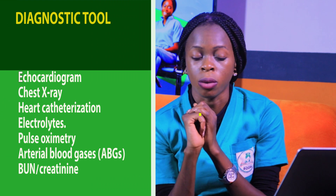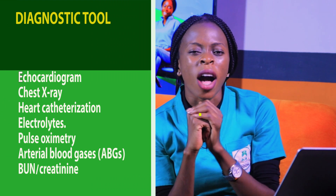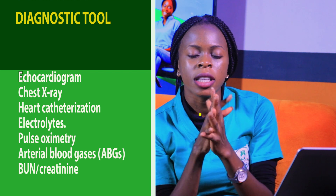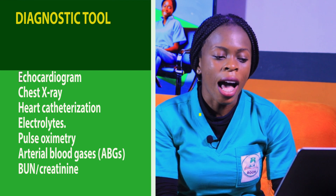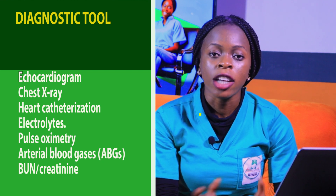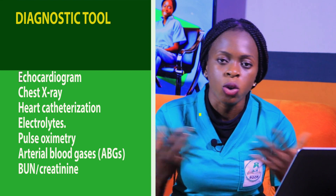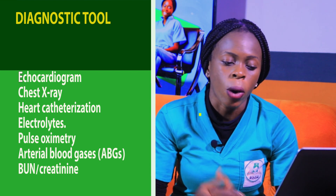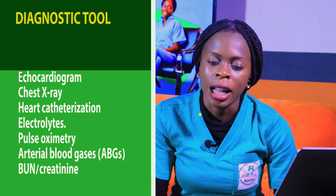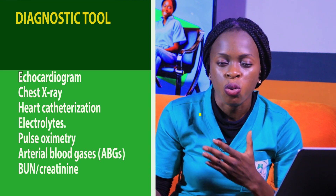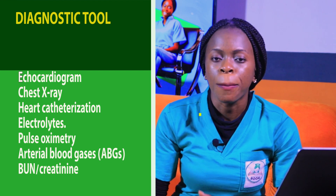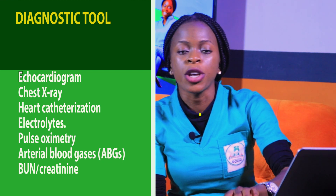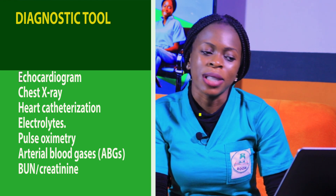The diagnostic tools for heart failure include the echocardiogram, chest X-ray, and heart catheterization. Electrolytes are checked because there will be movement and imbalance of electrolytes. Pulse oximetry is used to check oxygen saturation rates to ensure the body is getting enough oxygen. Arterial blood gas can also be done, and BUN and creatinine levels can be taken.